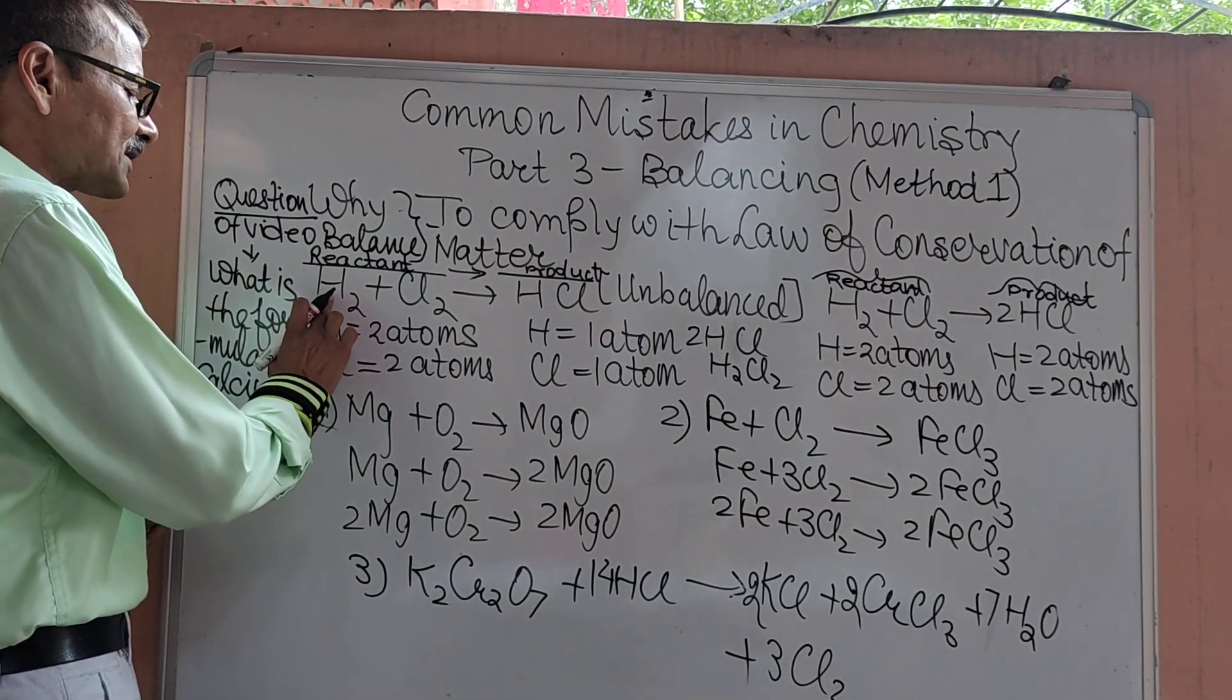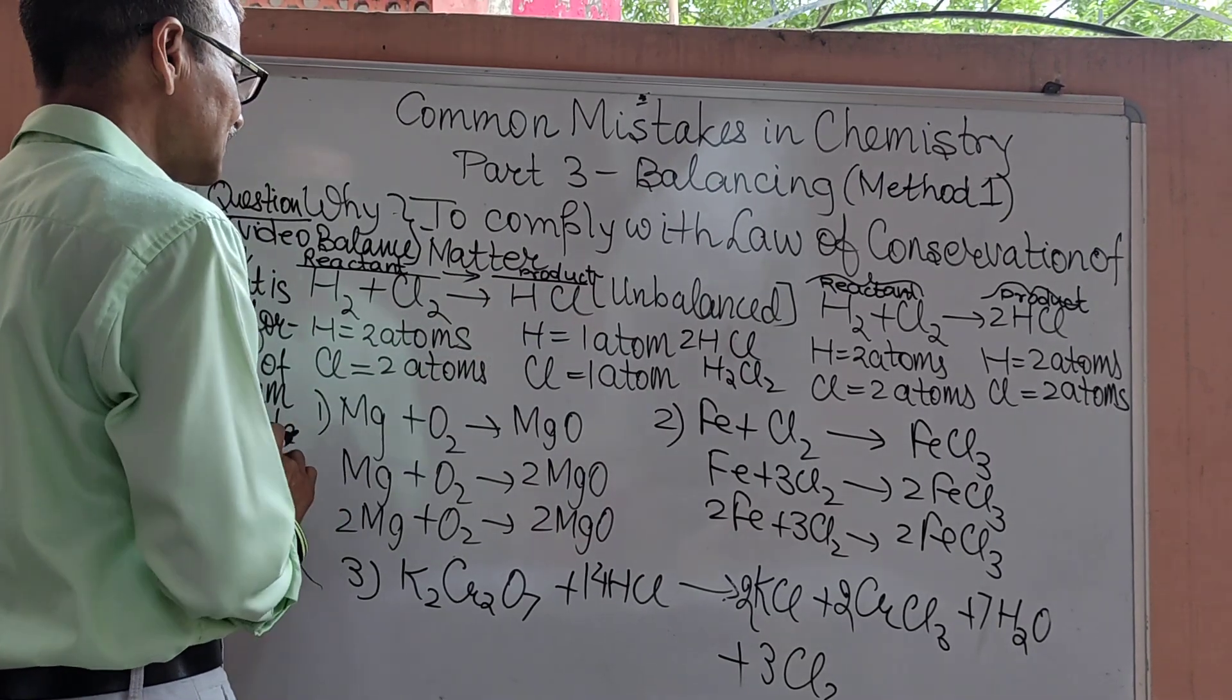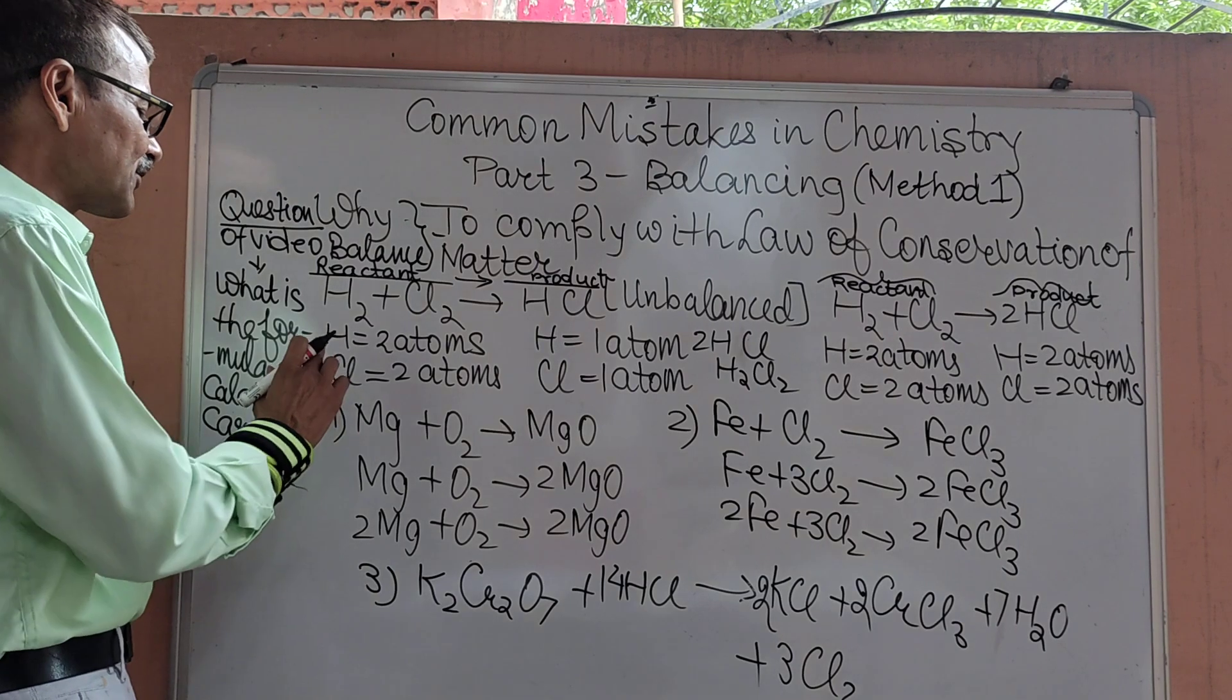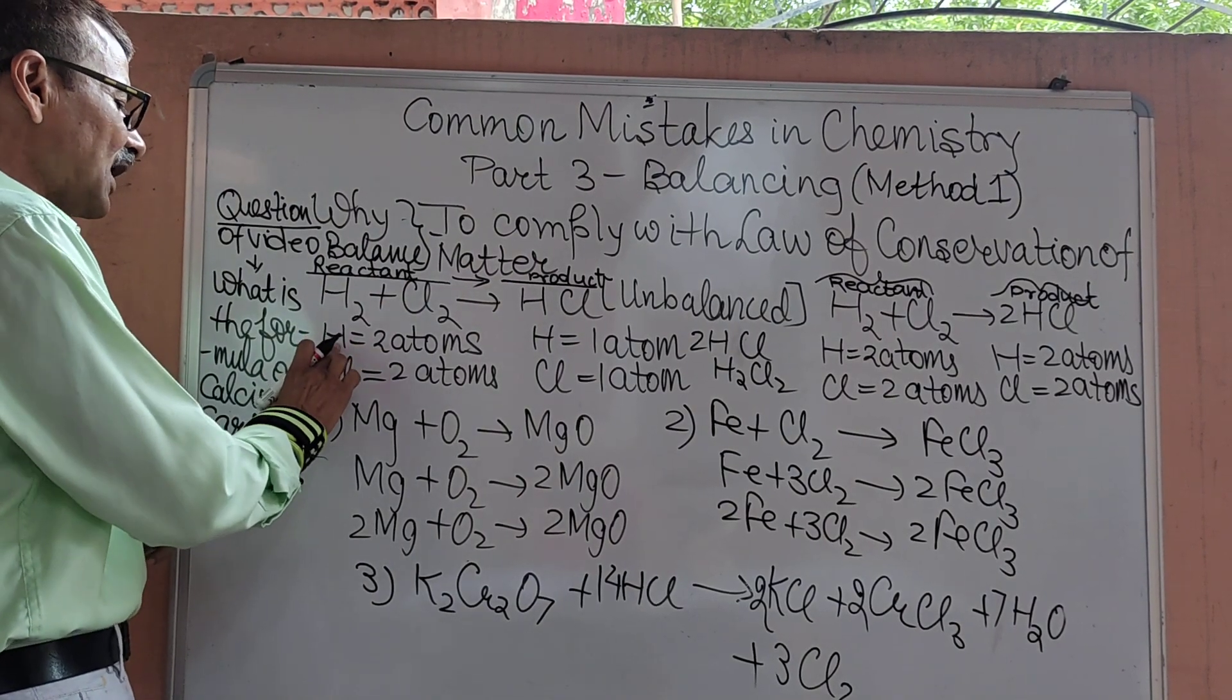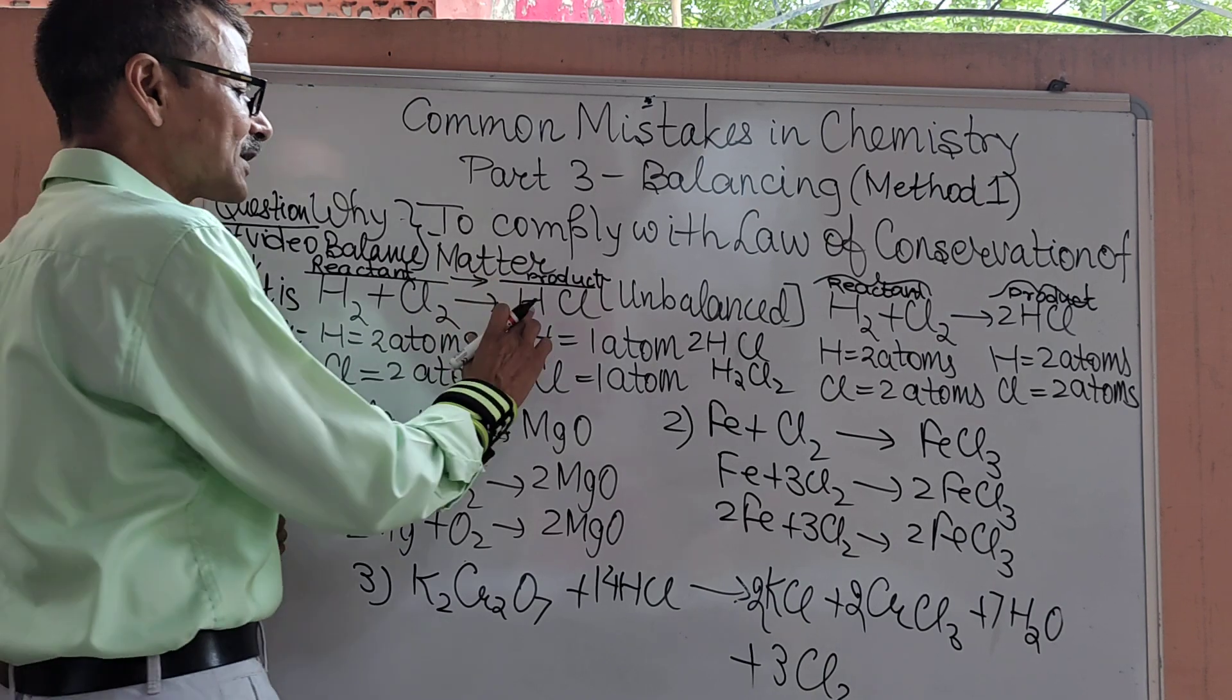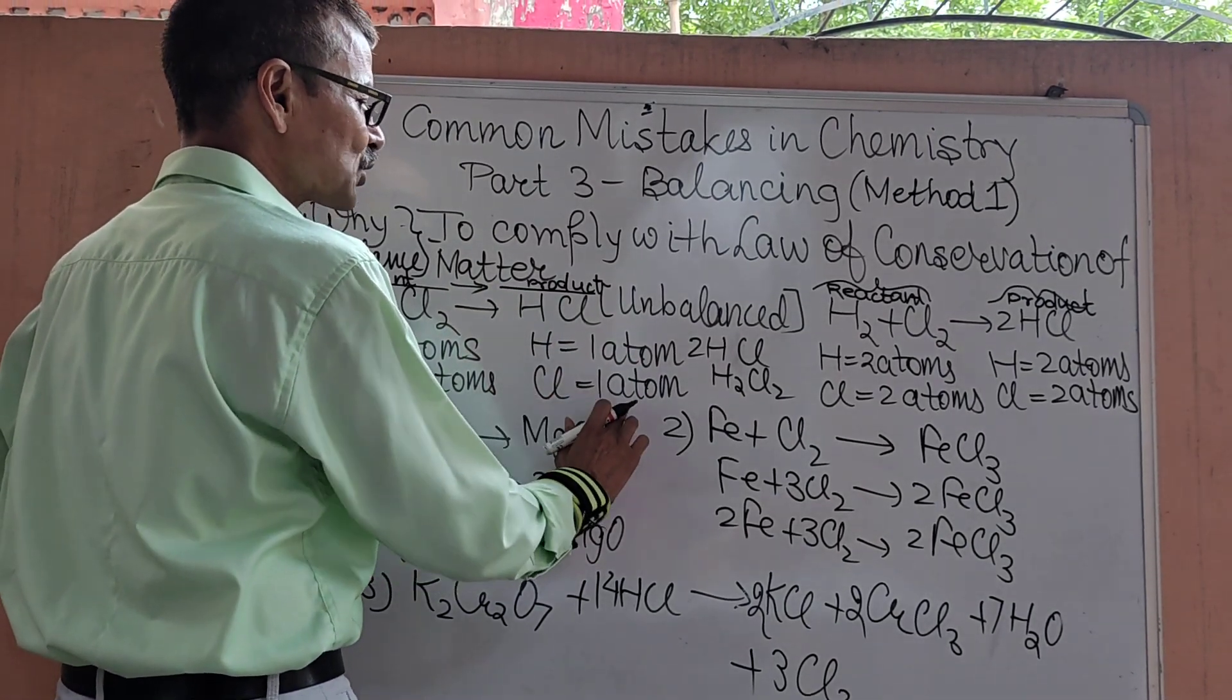I have taken as an example a reaction H2 plus Cl2 giving you HCl. If we observe this reaction carefully and analyze it, we find in the reactant hydrogen is 2 atoms, chlorine is 2 atoms, but in the product which is simply HCl, hydrogen is 1 atom and chlorine is 1 atom.